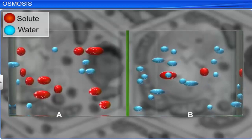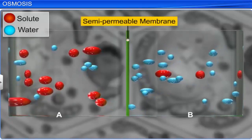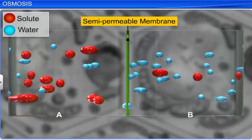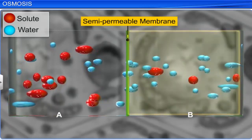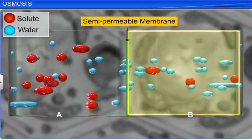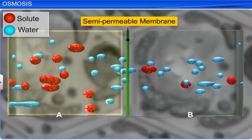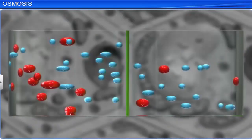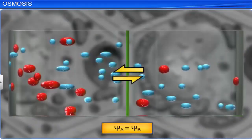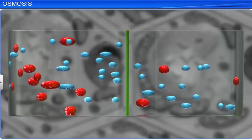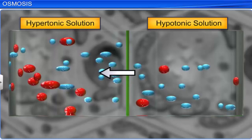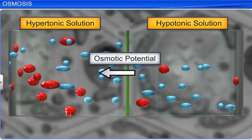If two solutions are put into a chamber separated by a semi-permeable membrane, water will move from the region of higher chemical potential or concentration gradient to the region of lower chemical potential, until equilibrium is reached. At equilibrium, both chambers will have the same water potential. The potential of water molecules to move from a hypotonic solution to a hypertonic solution across a semi-permeable membrane is called osmotic potential.